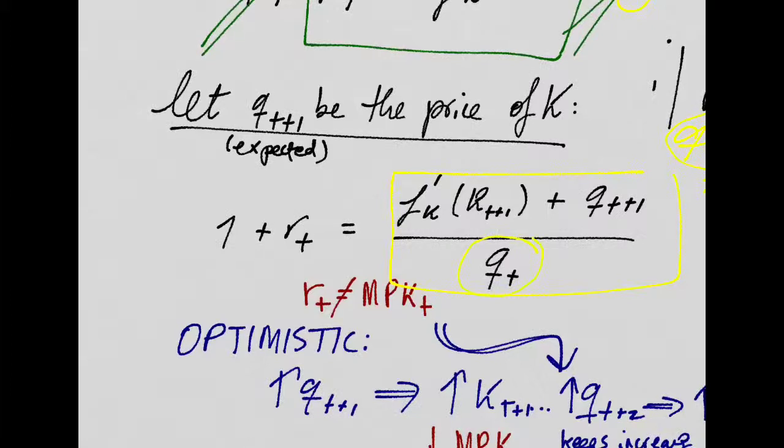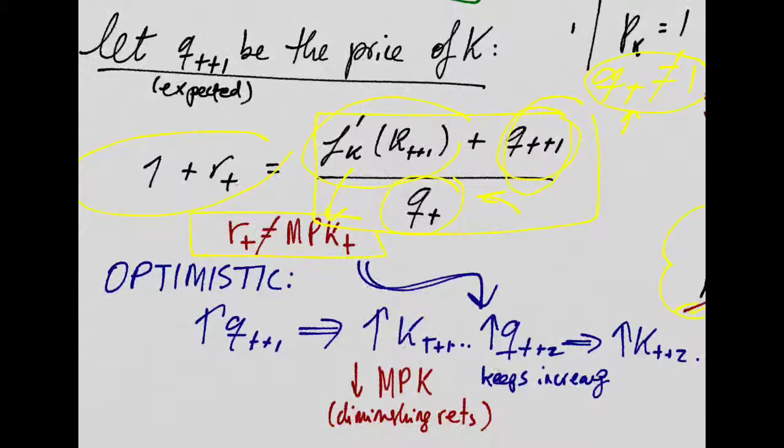and then the numerator of how much you're going to get by selling it, plus how much is it going to produce for you in the future, that is going to equal the gross interest rate. So the MPK is not going to be equal to the interest rate anymore because there's going to be fluctuations in the price of capital.